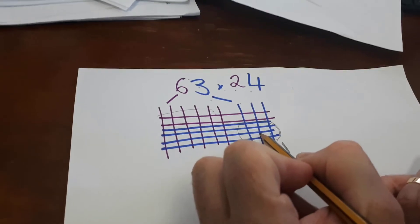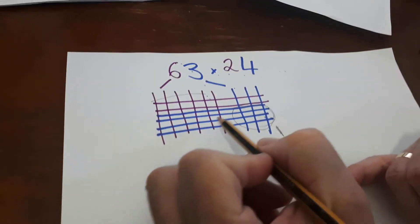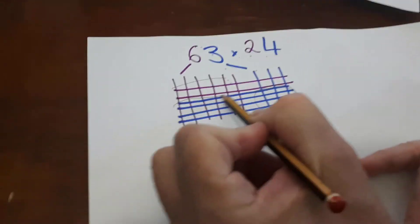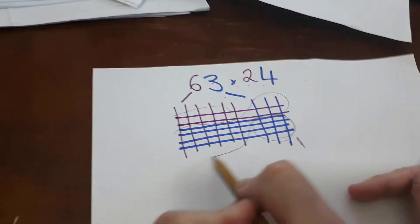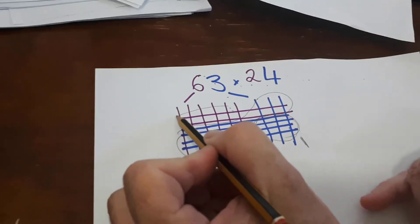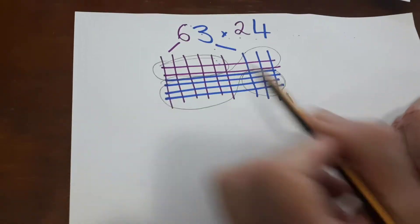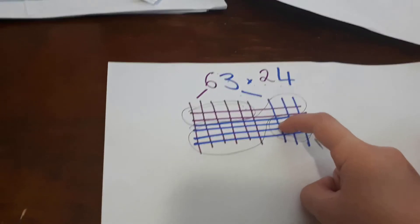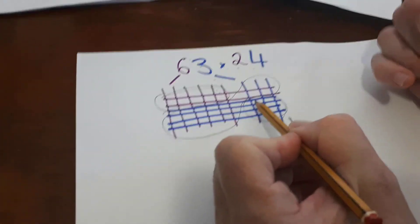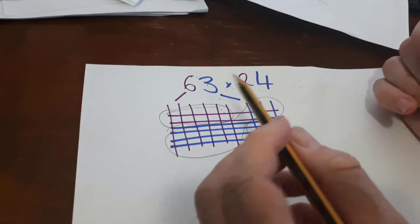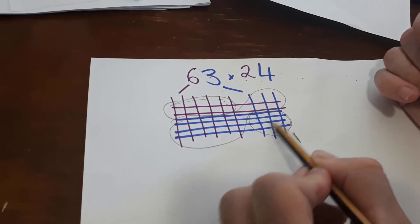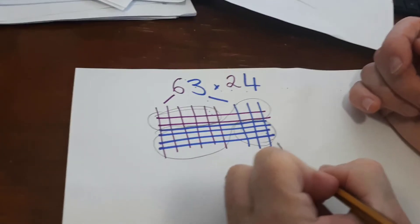So where we've got blue and blue, that's the ones. Where we've got blue and purple, these are the tens. And where we've got purple and purple, the intersections there, they're the hundreds. But there you have to count like the intersections. So one, two, three, four, five, six, seven, eight, nine, ten, twelve. So there's twelve ones.